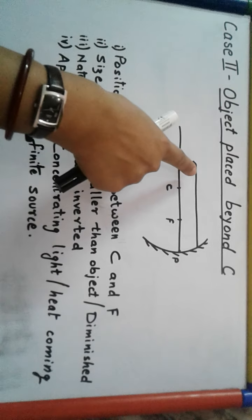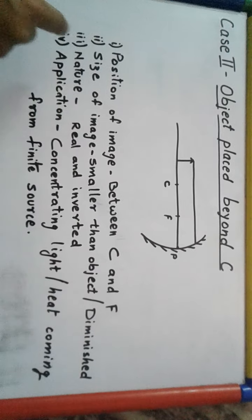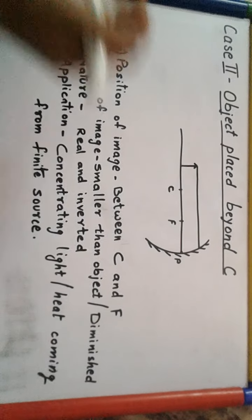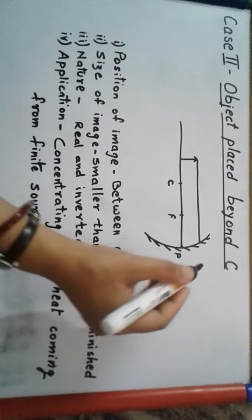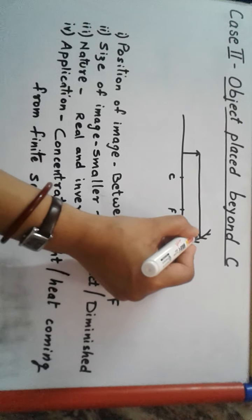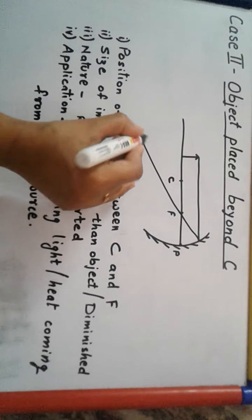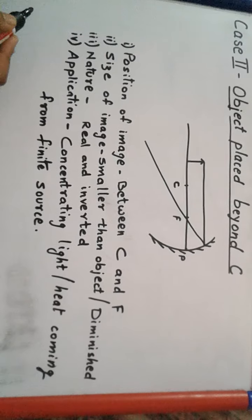The first ray is drawn parallel to the principal axis, and after reflection—that means after striking the concave mirror—it will pass through the focus. Why is it passing through the focus? Because that was Rule 1.